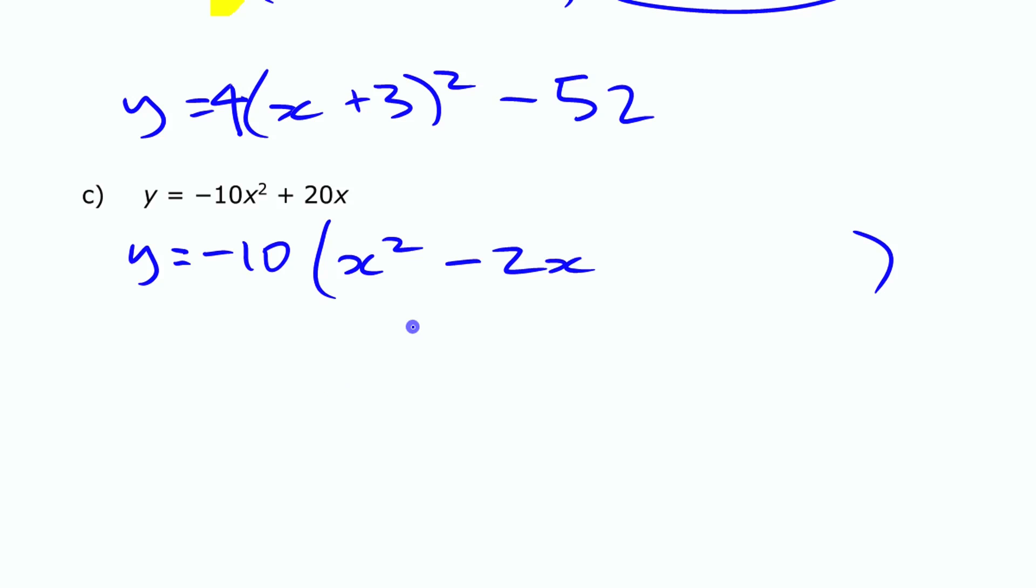Again, thinking about what perfect square binomial this could be, I like to think of the end here before I fill in my numbers. I'll write my minus 10 here because that's going to be there, but this is going to be (x minus 1), half of that number squared. If that were that value there, then the constant term I need in here is plus 1.